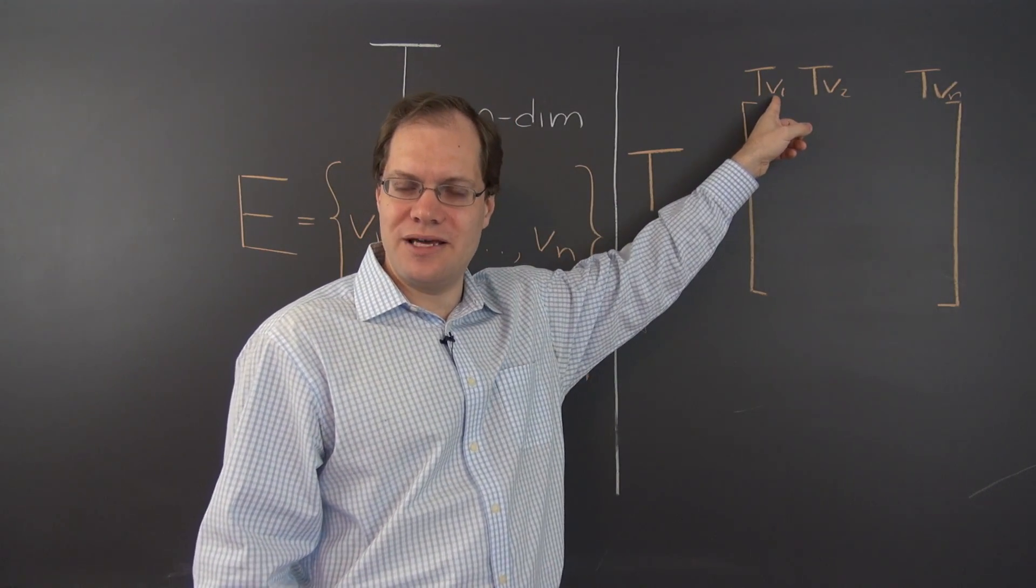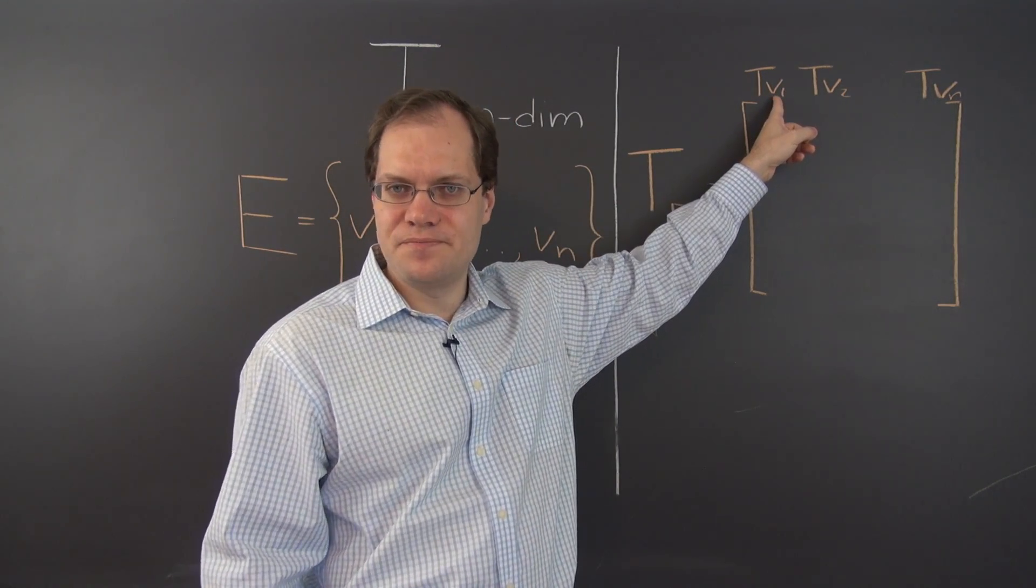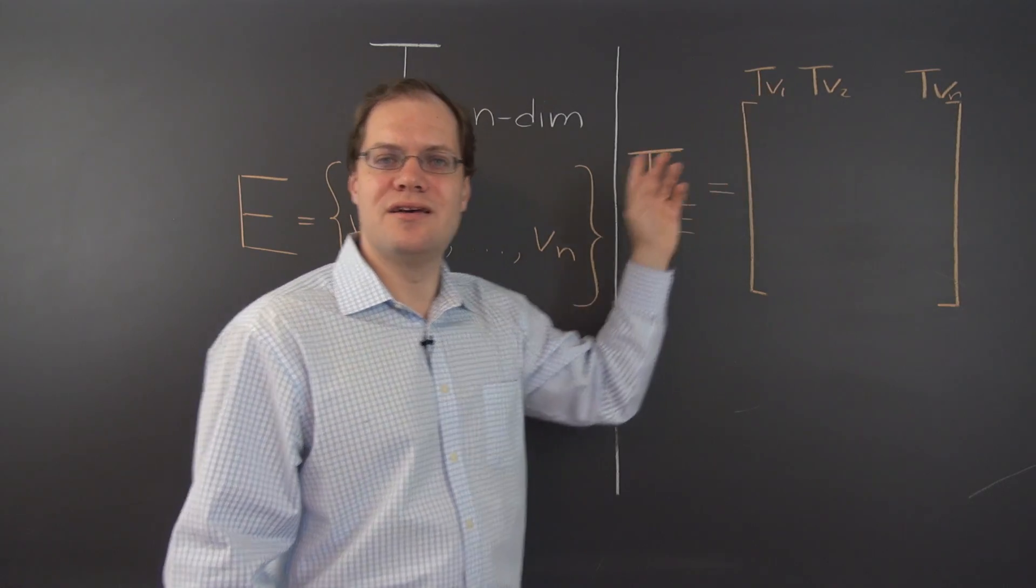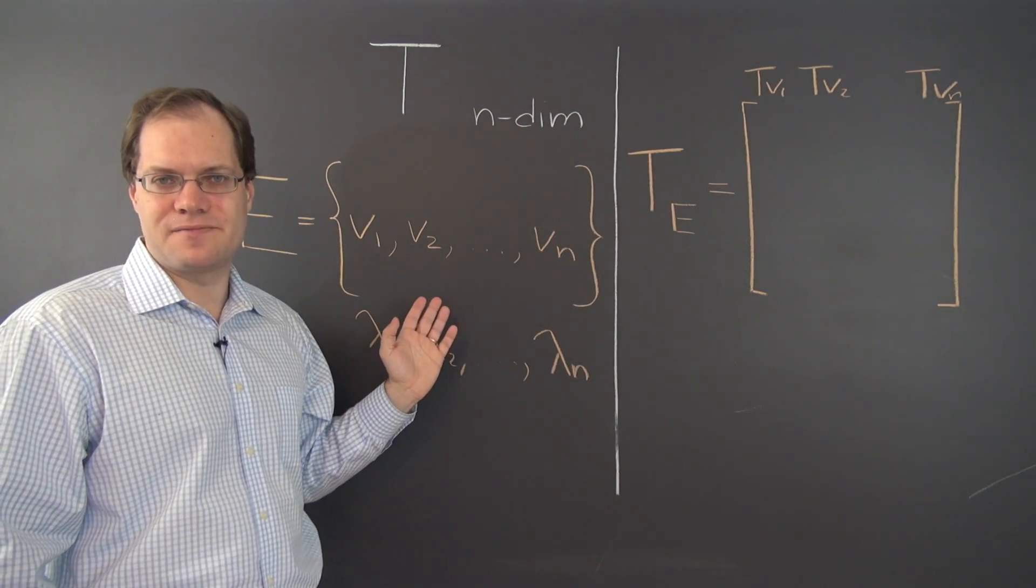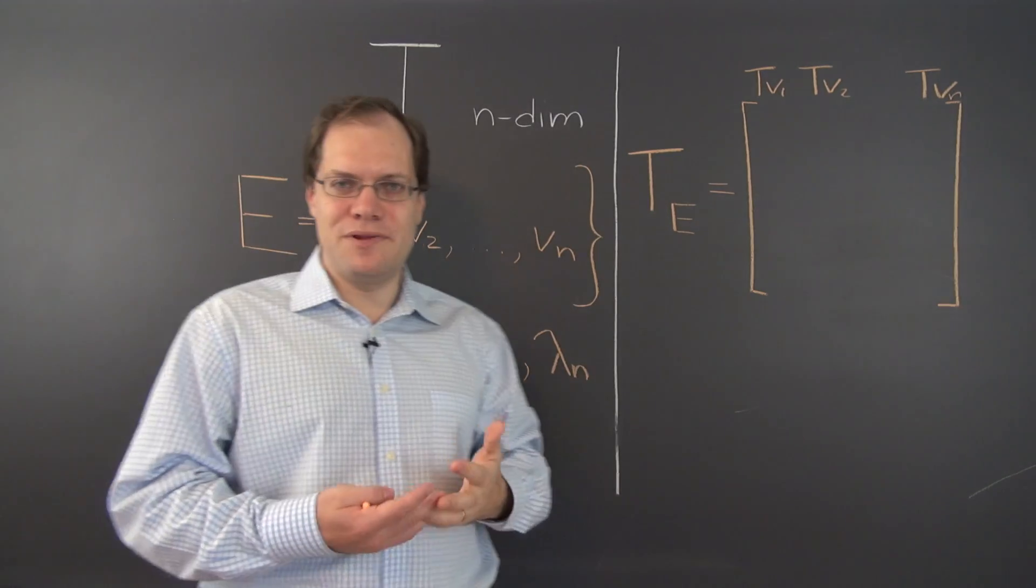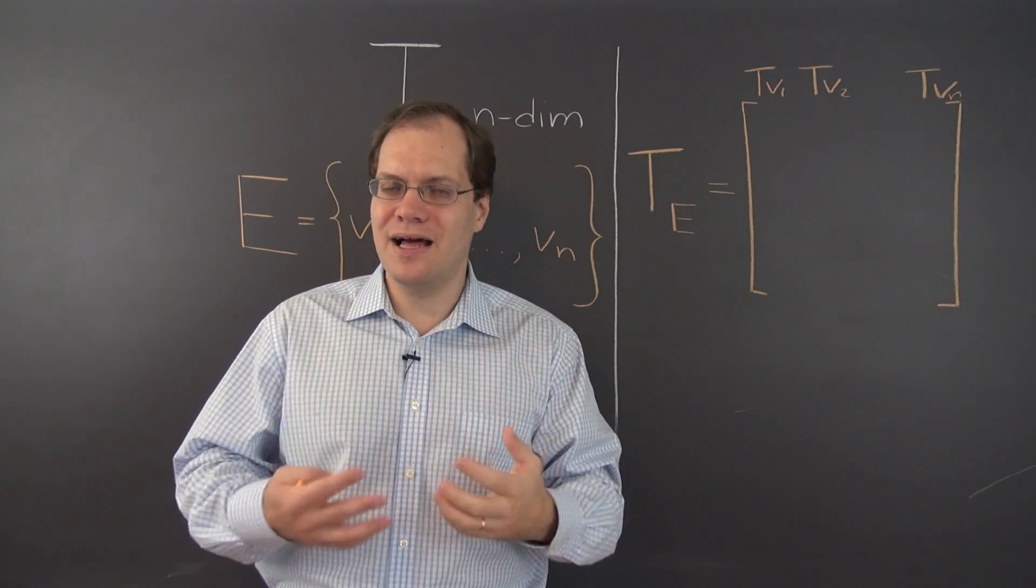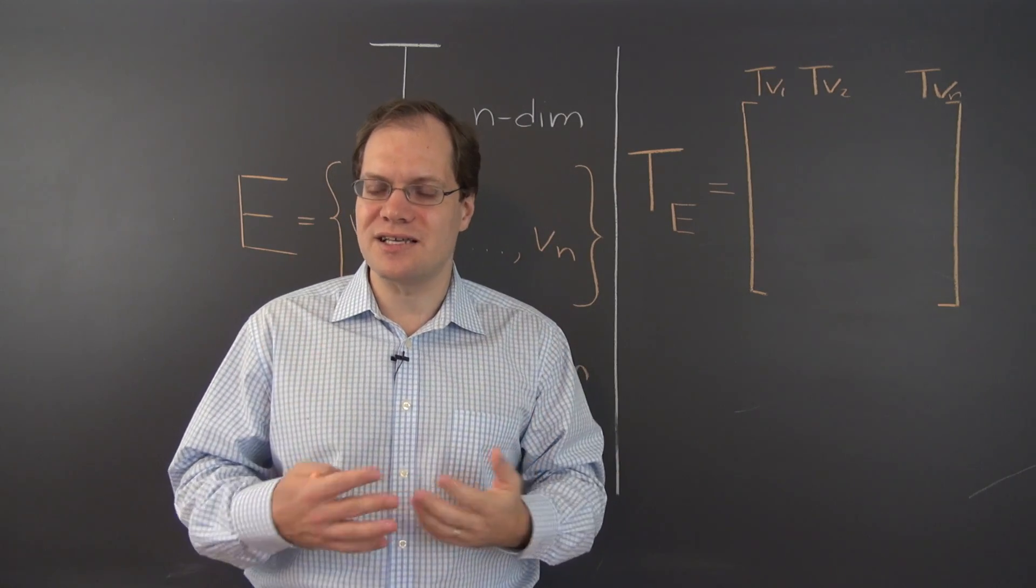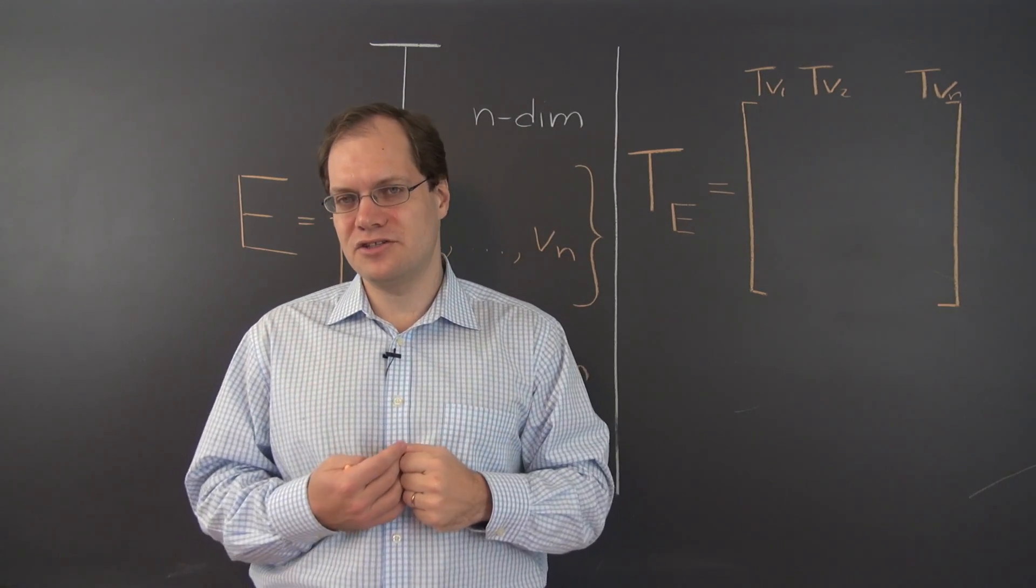And to construct the column, you have to apply the linear transformation to the vector and then decompose the result with respect to the same basis. Now it seems like we'll be completely lost because we're not able to apply this transformation in a very specific sense. Why? Because we don't have a specific linear transformation.